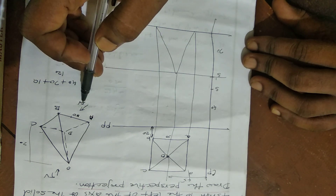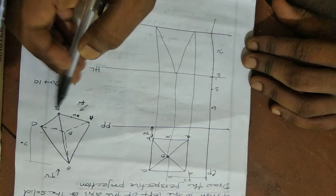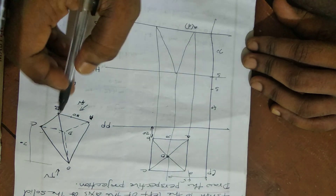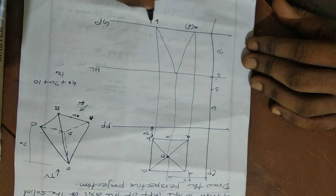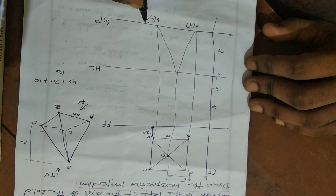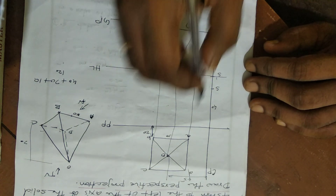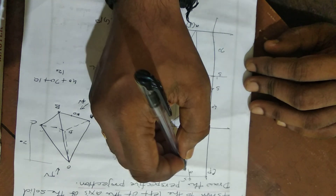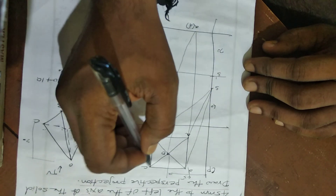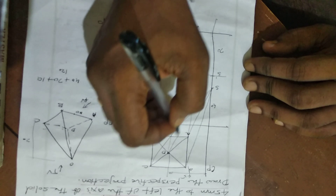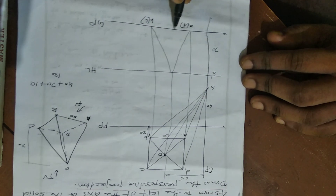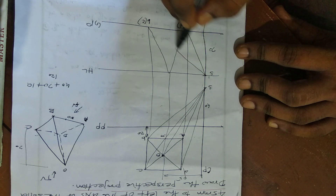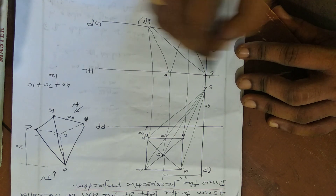This is the front view. We mark the points as A, B, C, and D in the front view. All corners are joined to the Station Point (SP). Join SP to A, B, C, and D, and similarly join all corners to S-dash.